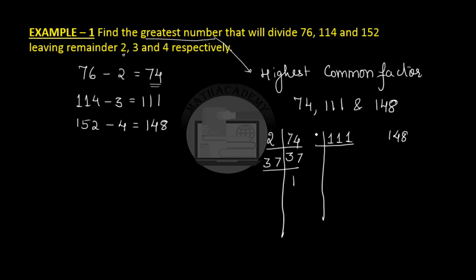111 goes by 3. 3 times 3 is 9. 3 times 7 is 21. And again we get a 37 which is a prime number. And then 148. So 2 times 74. 2 times 37. And 37 times 1.